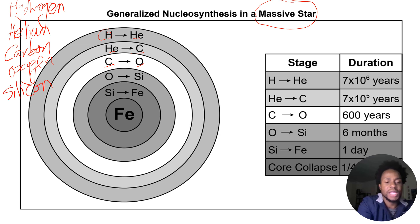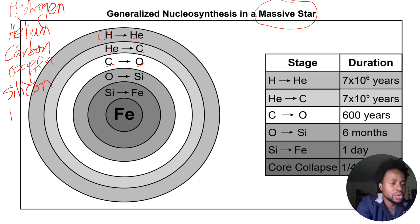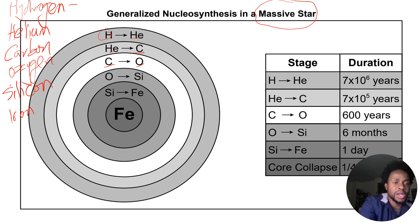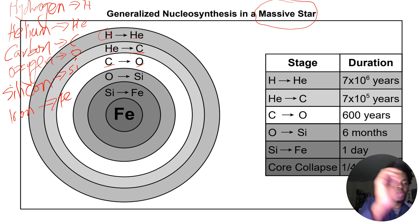Si represents silicon, and silicon is fused to produce iron, which is Fe. So to summarize the symbols: hydrogen is H, helium is He, carbon is C, oxygen is O, silicon is Si, and iron is Fe. Find this part in your reference table and make sure you have those annotated.